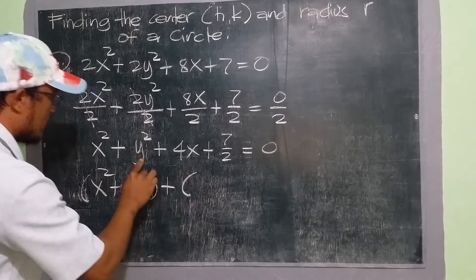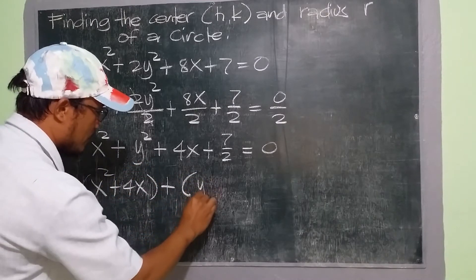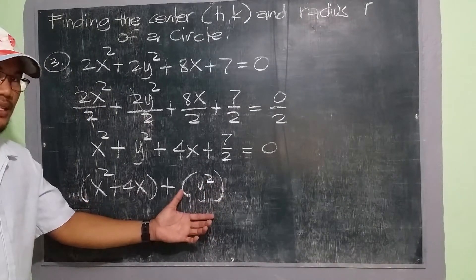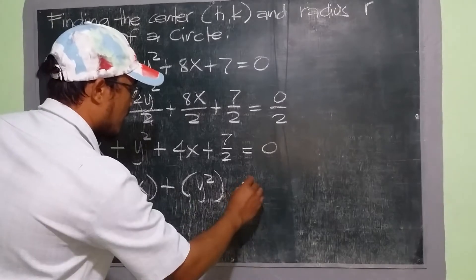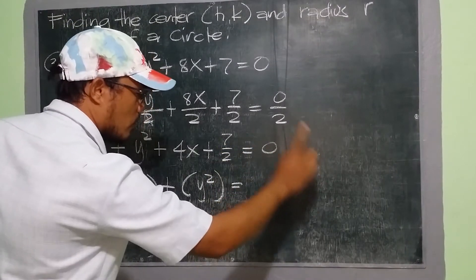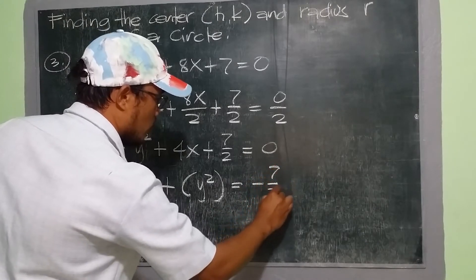Plus we have y squared. Since we only have y squared, so as it is, y squared. And then equal to 7 over 2, we transpose, we put that 2 on the other side, and it will become negative 7 over 2.